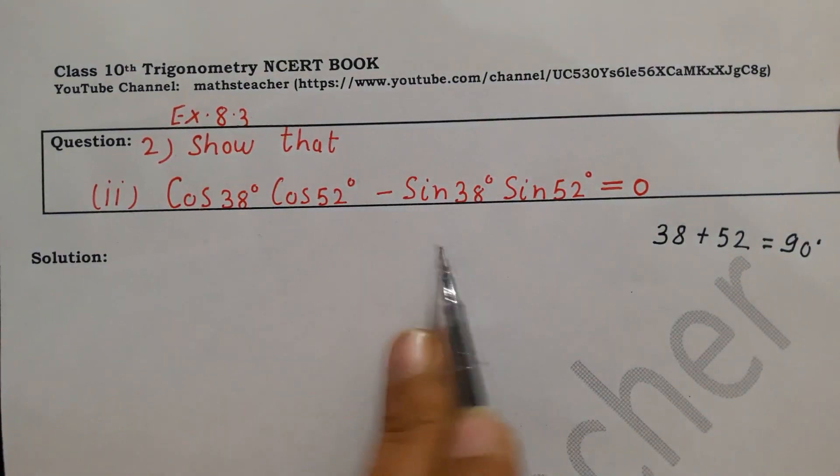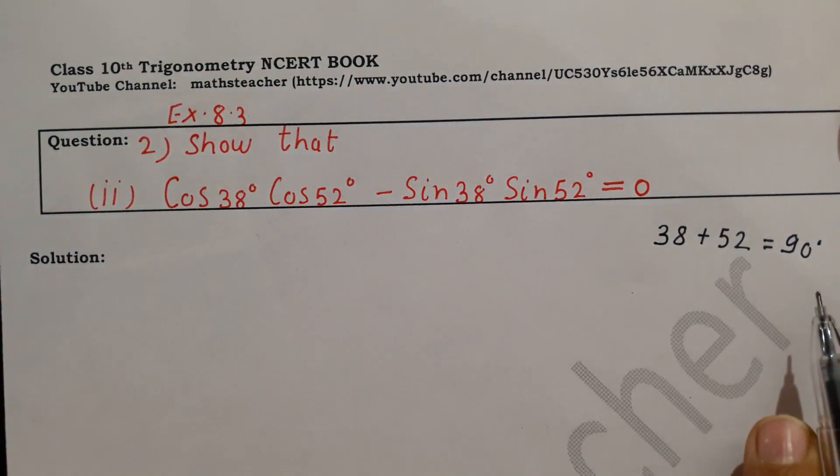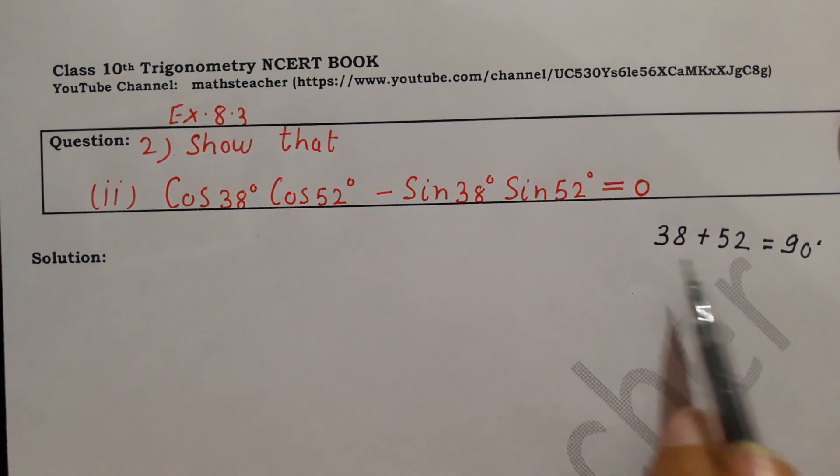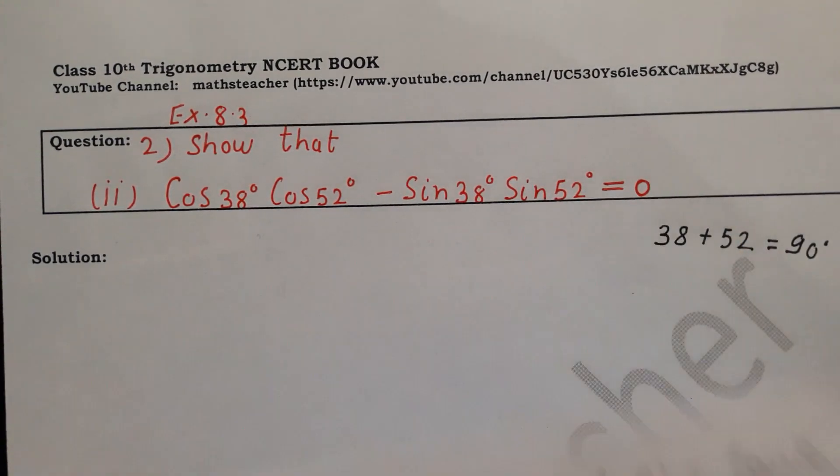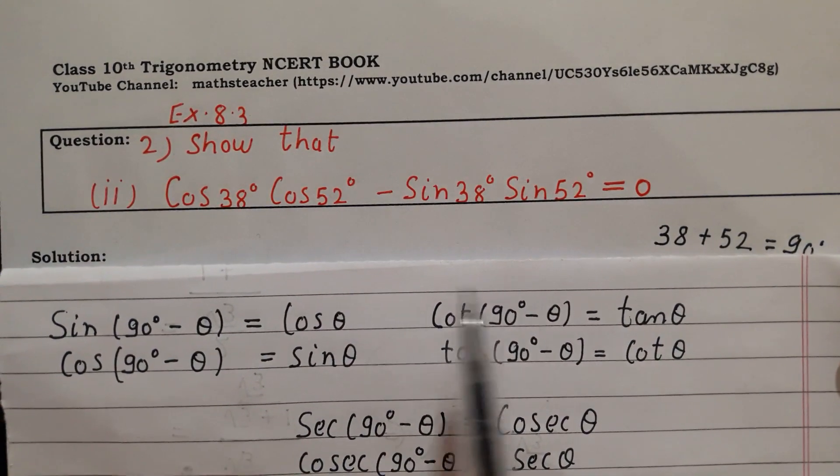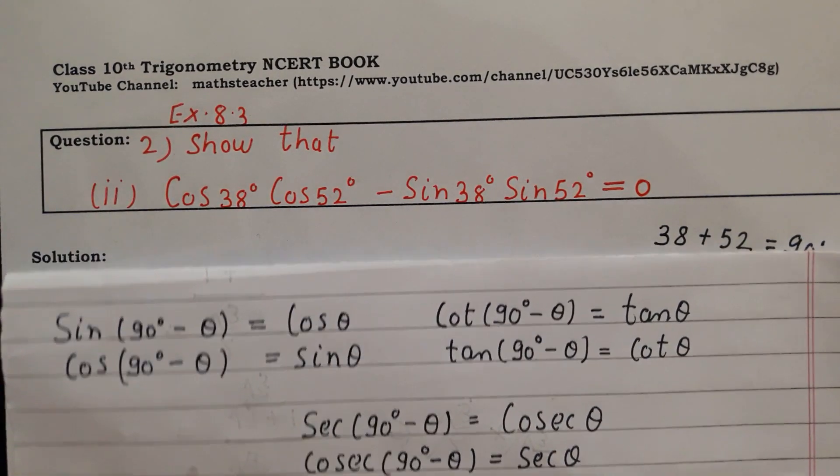If the sum of two angles is 90, what is this? Complementary angles. So these two are complementary angles. So we will solve them with complementary ratio.